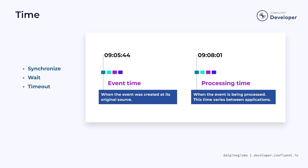For example, you might be looking for accounts that have attempted to log in five or more times in the past minute. Use cases like this need support for both state, which is used for counting, and time. Flink distinguishes between event time and processing time, or as it is sometimes called, wall clock time.